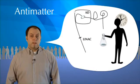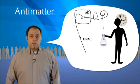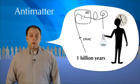At CERN, we produce antimatter daily. But don't worry. At the rate we produce it, it would take us more than one billion years to create one gram of antimatter.